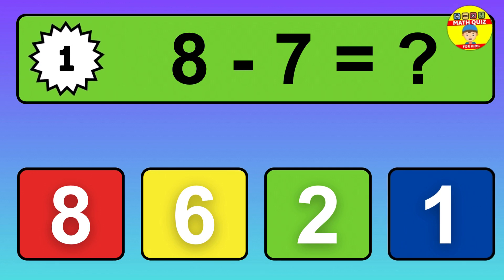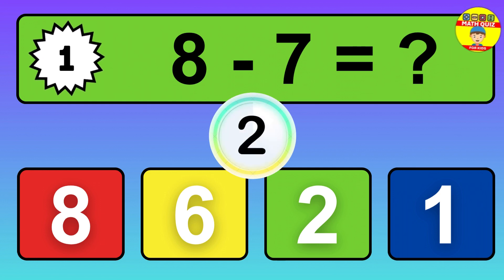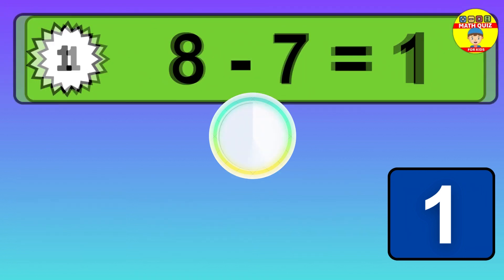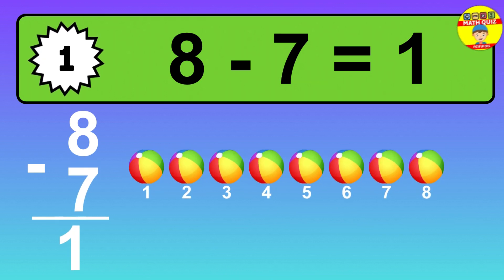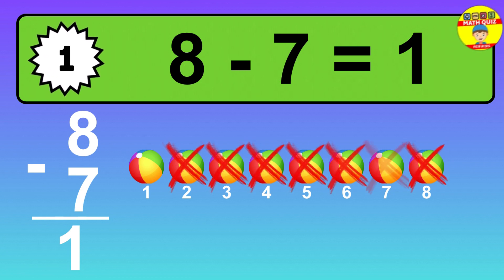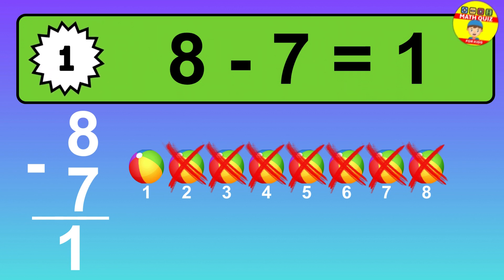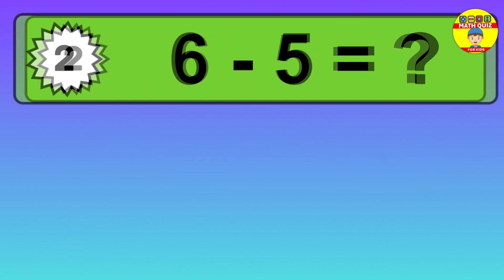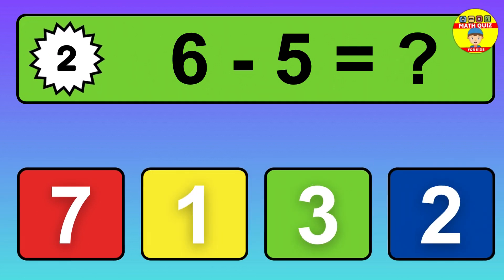Question 1. 8 minus 7 equals what? So the answer is 8 minus 7 is 1. Let's count it. 1.